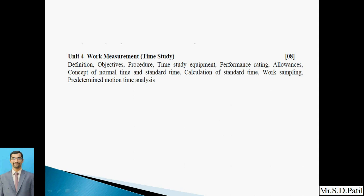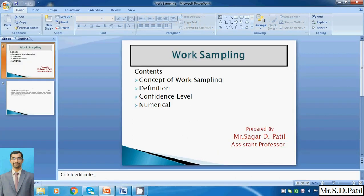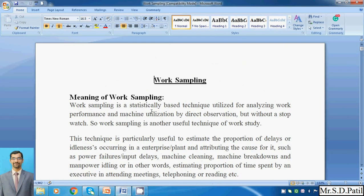Through that, we could predict what delays may occur because of breaks taken by the worker, machine breakdowns, and many more practical situations. Today, the further part we are going to see is the work sampling technique. We will cover the concept of work sampling, its definition, confidence level, and a few numericals based on work sampling.